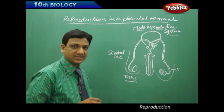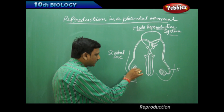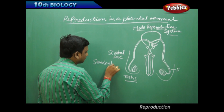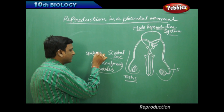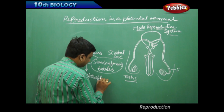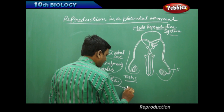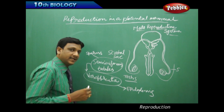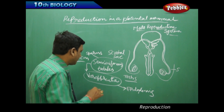The testes are responsible for the production of male gametes. Each testis consists of many tiny coiled thread-like structures called seminiferous tubules, in which sperm cells are formed. These seminiferous tubules are very thin, coiled, and very long — up to 80 centimeters in length. The sperm cells produced in the seminiferous tubules are collected by vas efferentia.